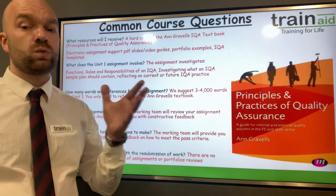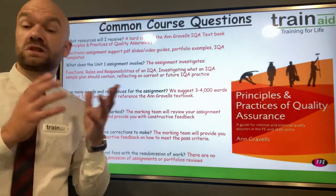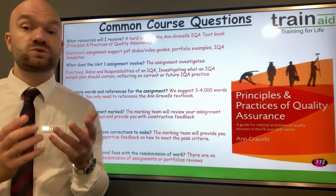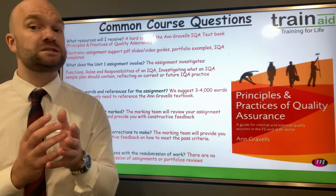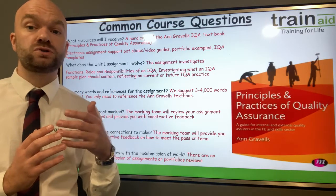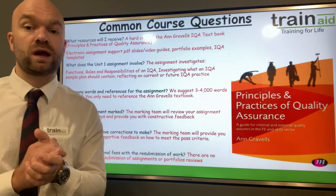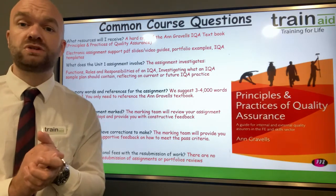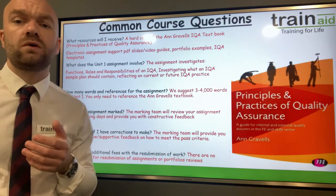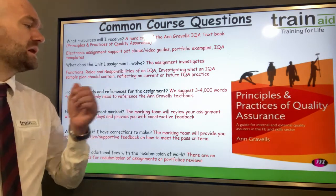What does Unit 1 involve? Unit 1 has a suggested word count of 3,000 words and you have to investigate the functions, roles and responsibilities of an IQA — essentially what an IQA does. You can write in the first or third person and are encouraged to reflect on your current or future IQA role. The suggested word count is between three to four thousand words and the only source you need is the IQA textbook, though you can use other sources such as textbooks, websites and journals.